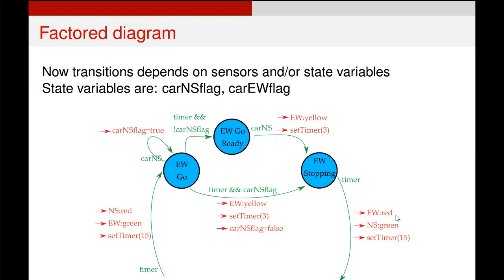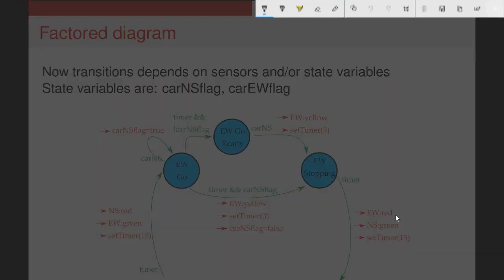Here's an example of that same finite state machine from before, our mealy finite state machine, using just a single north-south car flag, a state variable. This eliminates one of those states entirely and we can see some really interesting things going on in this finite state machine.